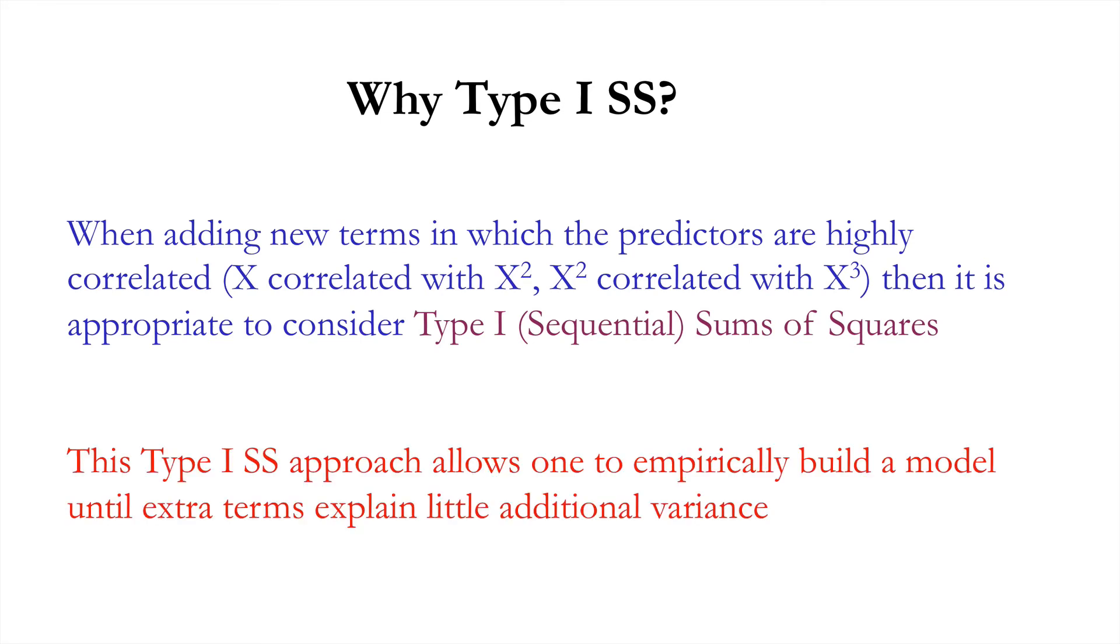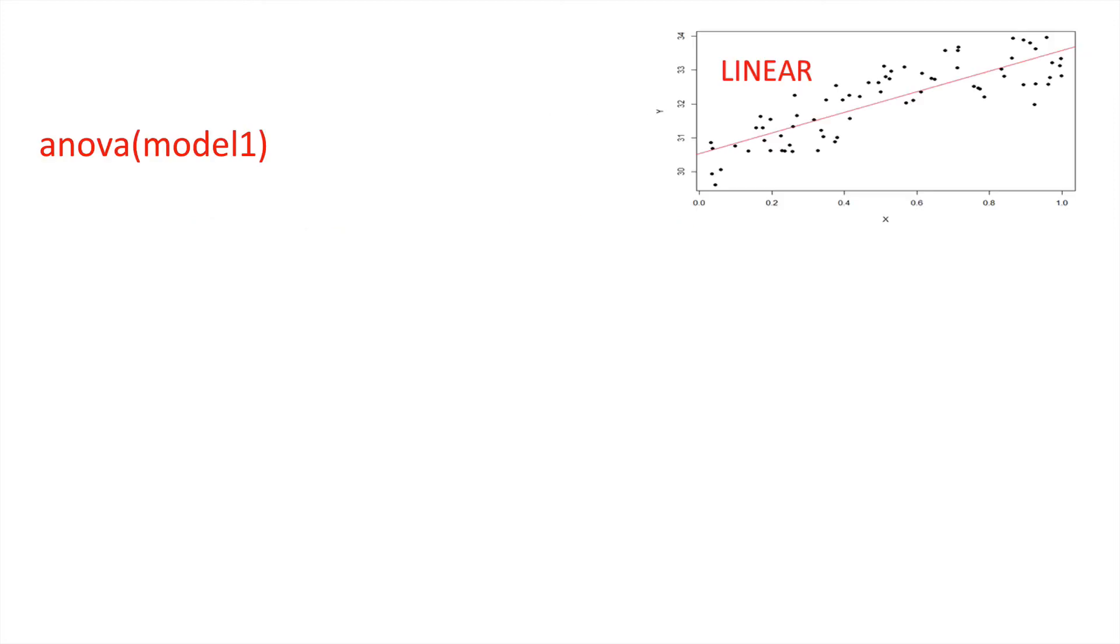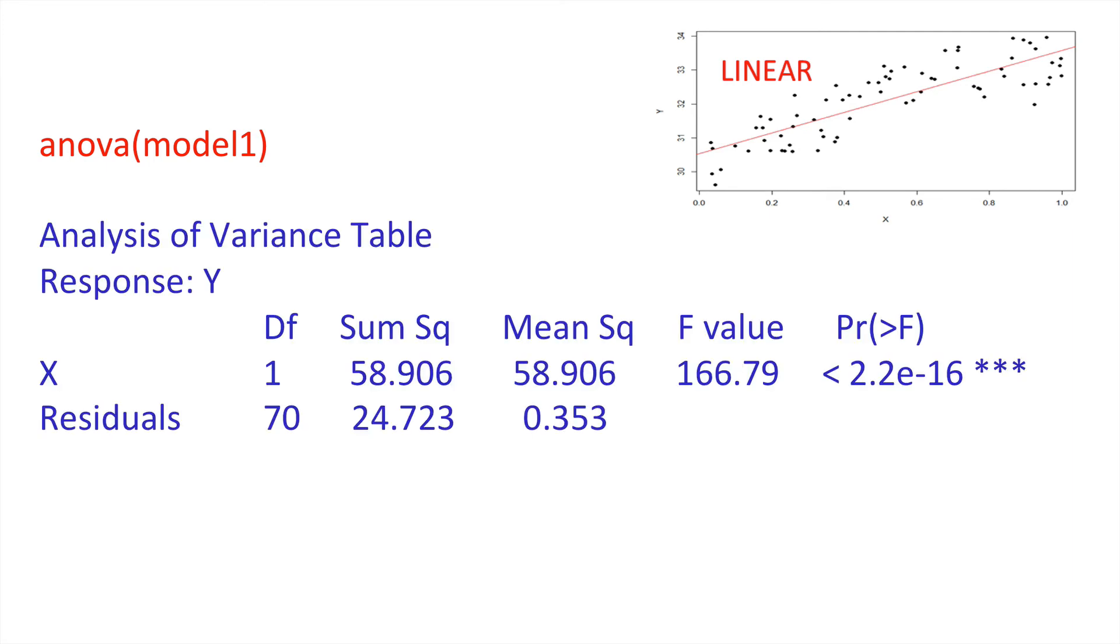With the type 1 sum of squares, it allows us to empirically build a model until extra terms explain little additional variance in our response variable y. So, let's see how that works. Here is the linear model that has been fitted to our data. And we can simply call up ANOVA for model 1, which was generated by fitting that general linear model. And here is the analysis of variance table. What this tells us is that x explains significant variability in that response variable y. So, all is good.